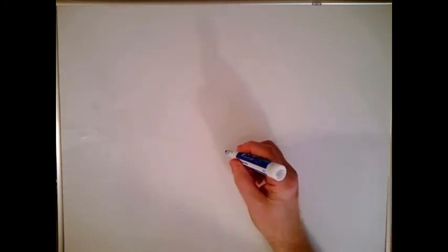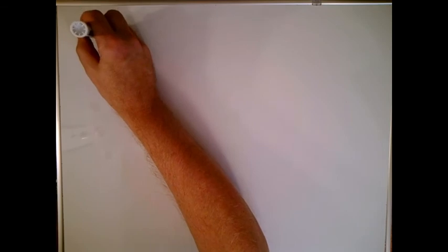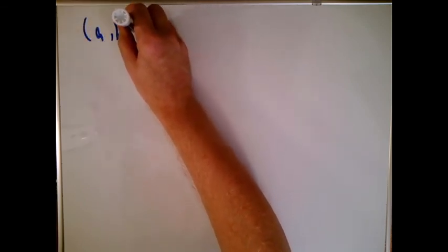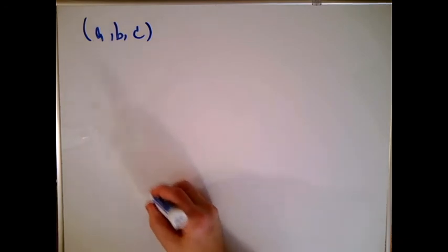So what's the definition of a sphere? A sphere has a center. We tend to actually just call the center something like ABC or X naught, Y naught, Z naught. I'm just going to use ABC for now. And it has a radius.